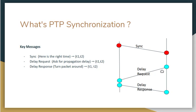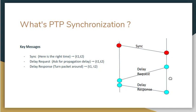The target device sends a delay request at time t1, which is received at time t2 and recorded. Then at time t3 a response is sent back, carrying all these timestamps: t1, t2, t3, and t4, which is when the second device receives the response. Once the second device has all four times, it can compute the bidirectional delay and compensate for the time error.